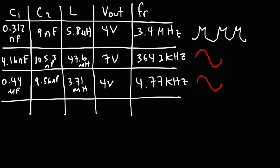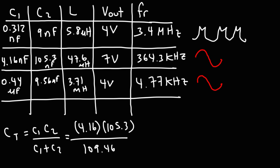Let's use the formulas to calculate the theoretical frequencies for these trials. Let's focus on trials two and three. So first, you need to calculate CT, which is C1 times C2 over C1 plus C2. So for the second trial, C1 is 4.16 nanofarads, C2 is 105.3 nanofarads, divided by the sum, which is 109.46. This gives us a CT value of 4.0019, which we could say approximately 4 nanofarads.